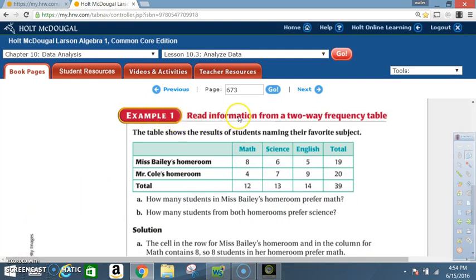Example 1. Read information from a two-way frequency table. The table shows the results of students naming their favorite subject. Miss Bailey's homeroom, Miss Cole's homeroom, Total. Math, science, English and the total. How many students in Miss Bailey's homeroom prefer math? How many students from both homerooms prefer science?